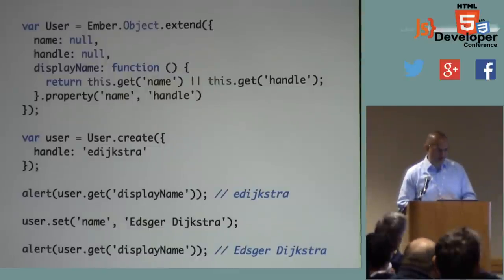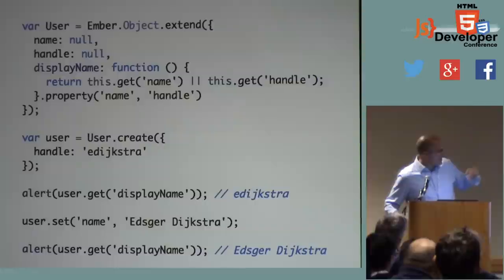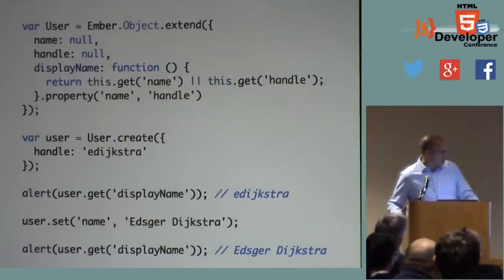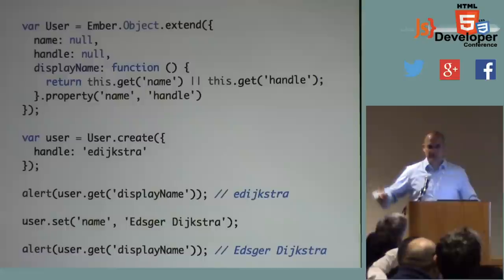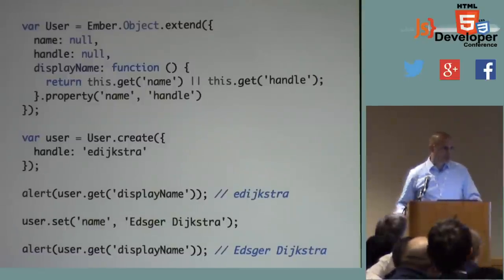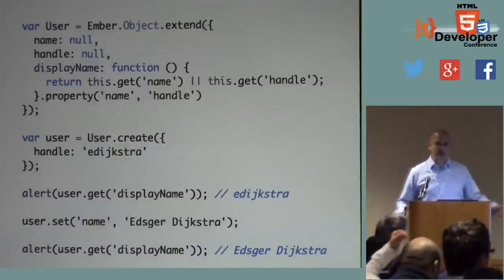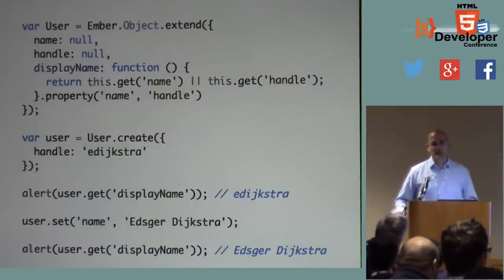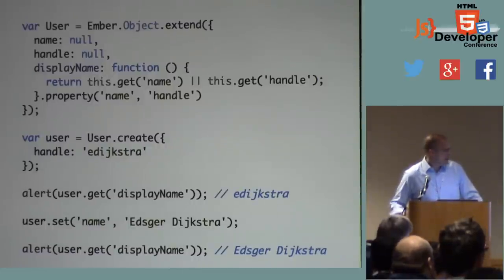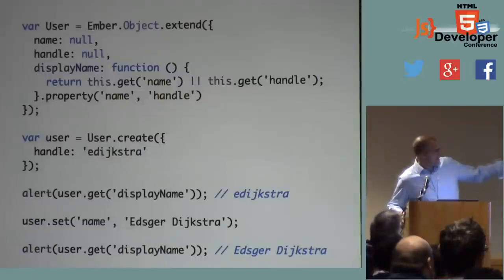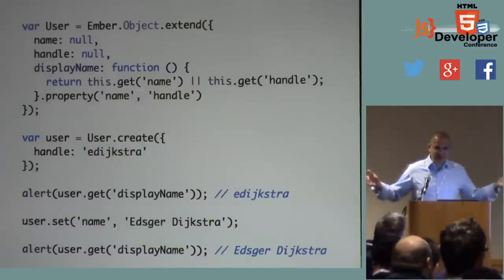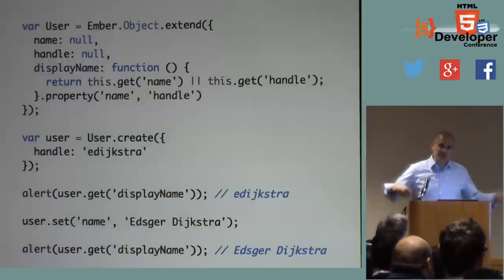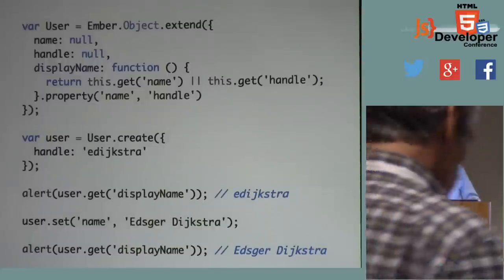This is a really powerful feature. I create a user with the handle edykstra, then get the display name. Since it's the first time we've gotten that property, we call our display name function to figure out its value — return this.get name or this.get handle. There's no name, so that's null, and we return the handle.